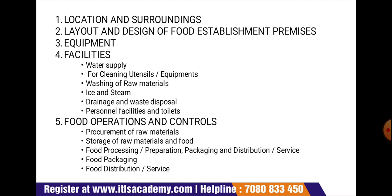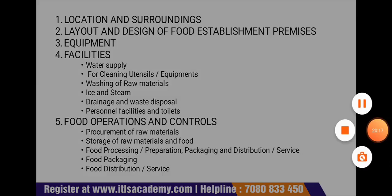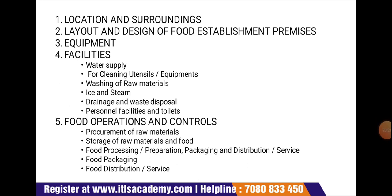Next, for cleaning utensils and equipment: adequate facilities for cleaning and disinfecting of utensils and equipment shall be provided, with an adequate supply of hot and cold water. For washing of raw materials: adequate facilities for washing raw food shall be provided. All basins for washing food items must have an adequate supply of hot and cold water. Ice and steam used in direct contact with food shall be made from potable water, shall comply with requirements, and shall be produced, handled, and stored in such a manner that no contamination can happen.